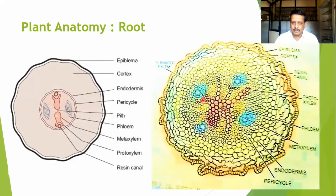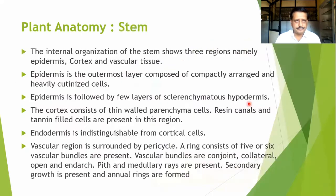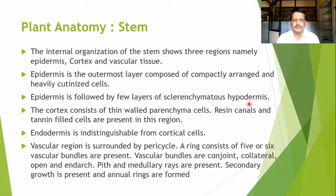The stem is also typical. The internal organization of the stem shows three different regions: epidermis, cortex, and vascular tissue. In the root, instead of epidermis, there is the presence of epiblema. But here in the stem, epidermis, cortical zone, and vascular tissue can be observed. Epidermis is normally made up of compactly arranged, heavily cutinized cells where a cuticle is present, composed mostly of parenchymatous cells.